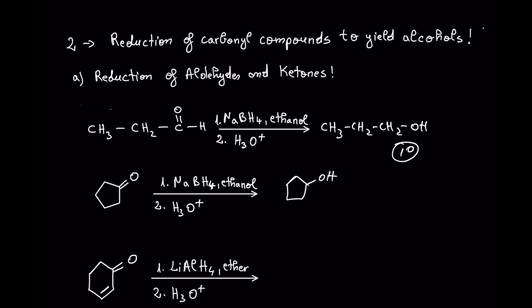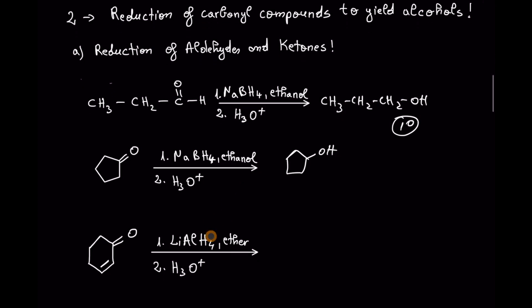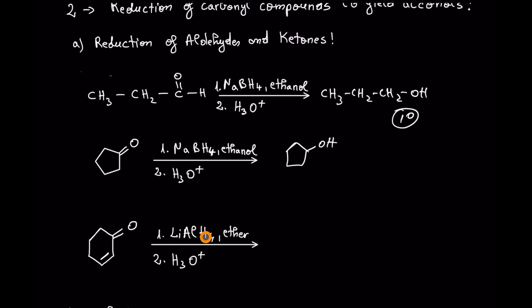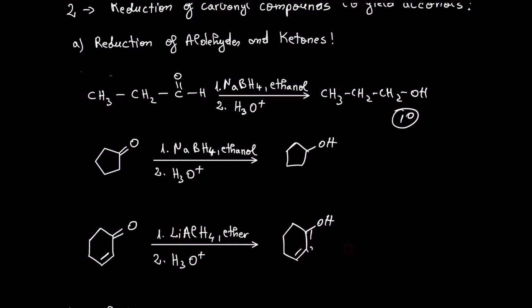Another way to reduce aldehydes and ketones is by using lithium aluminium hydride. Lithium aluminium hydride is way more reactive than sodium borohydride. You have to know that lithium aluminium hydride is selective in the sense that it is not going to reduce the double bond — it is going to touch only the carbonyl group and reduce that, in this case to a secondary alcohol. If you want to name this, it is 2-cyclopentenol, because the double bond is at position two.